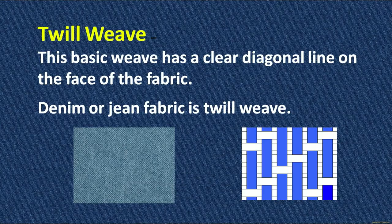Now we will discuss about twill weave. This is a basic weave that has a clear diagonal line on the face of the fabric. Because of this property, twill weave is widely used for making many articles like jean fabric and khadi twill weave fabric. These fabrics are thick and have very good durability.